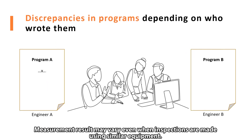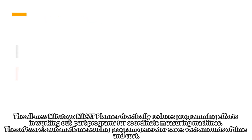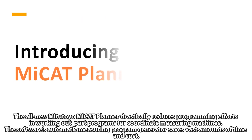Measurement results may vary even when inspections are made using similar equipment. The variation in measurement programs may cause the need for extra procedures such as re-inspections, resulting in an inefficient production process. The all-new Mitutoyo MCET Planner drastically reduces programming efforts in working out part programs for coordinate measuring machines.